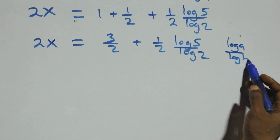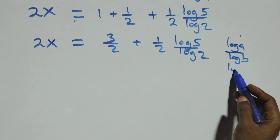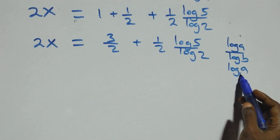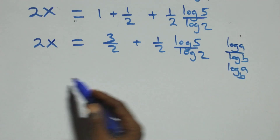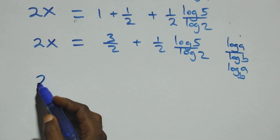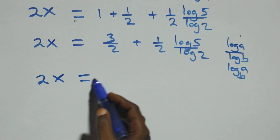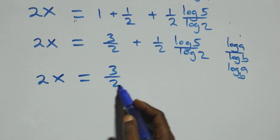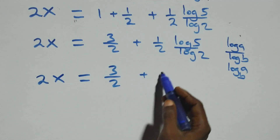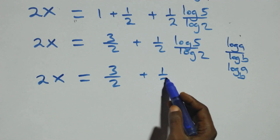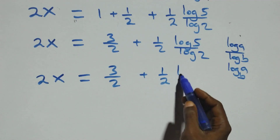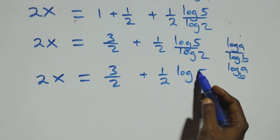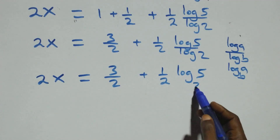Combining the terms, we have 2x equals 3 over 2 plus (1 over 2) log base 2 of 5.